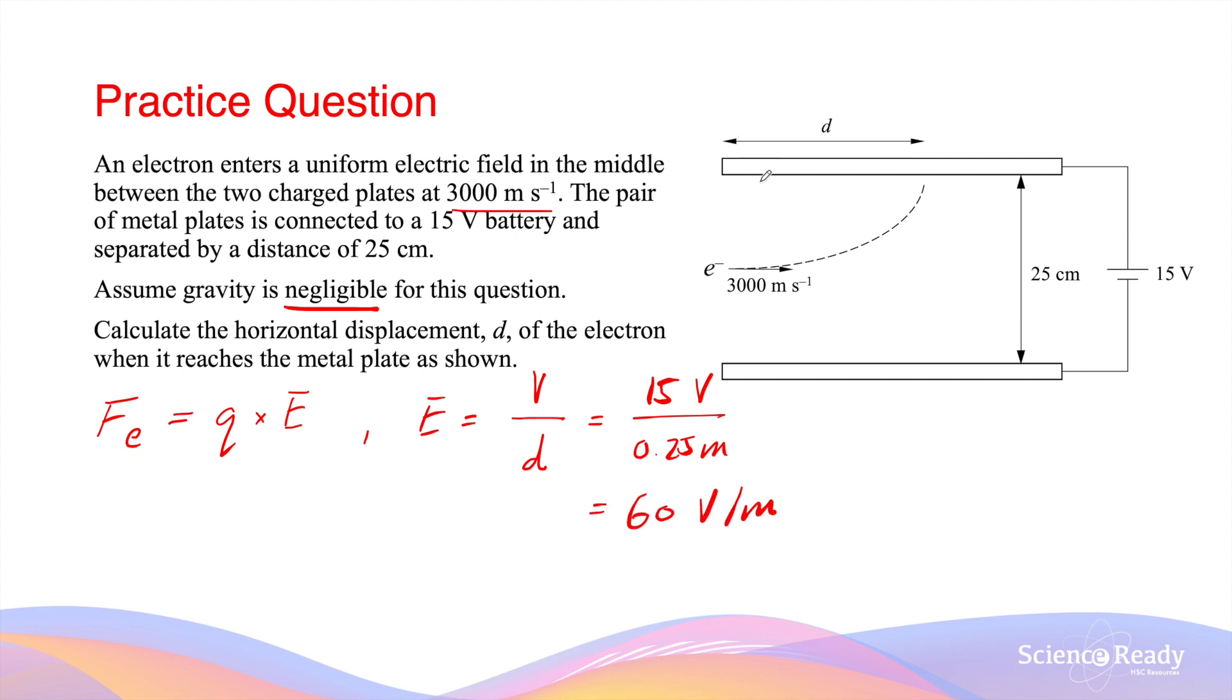By way of review, the direction of the electric field always goes from the positively charged metal plate towards the negatively charged metal plate. In this case, the force acting on the electron will be upwards because the electron is negative, so it experiences a force towards the positively charged metal plate.